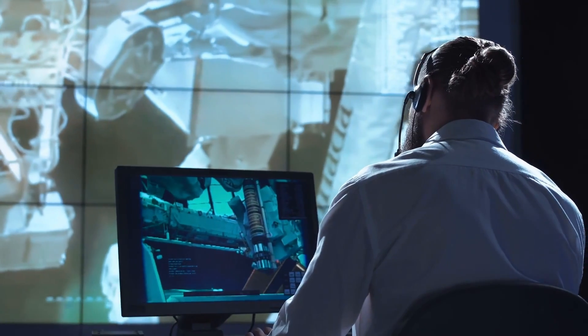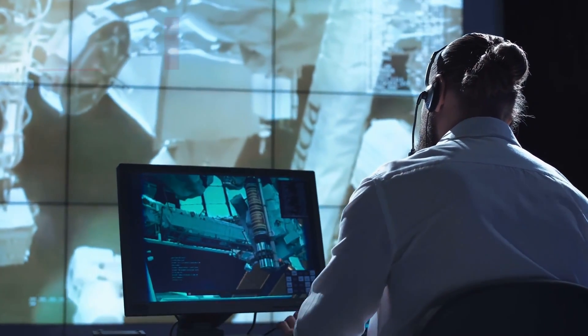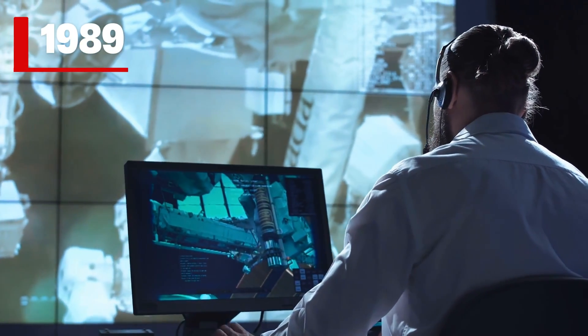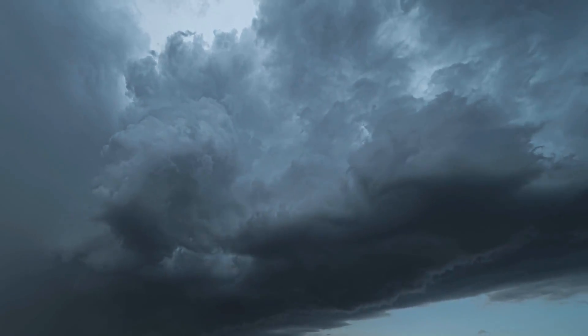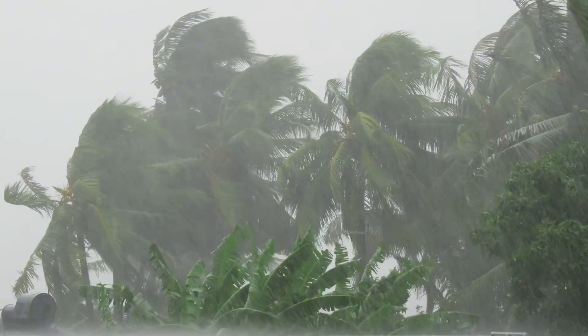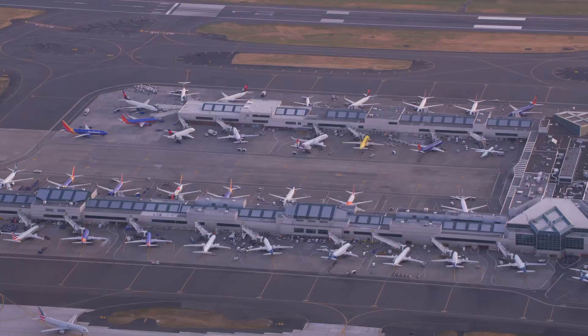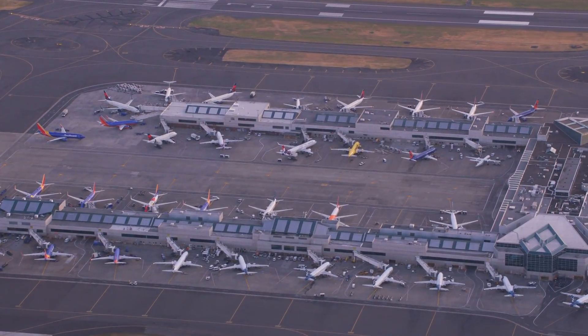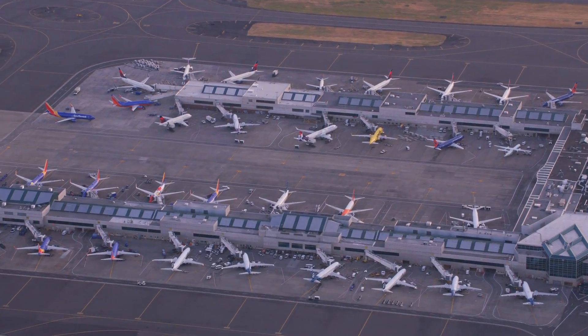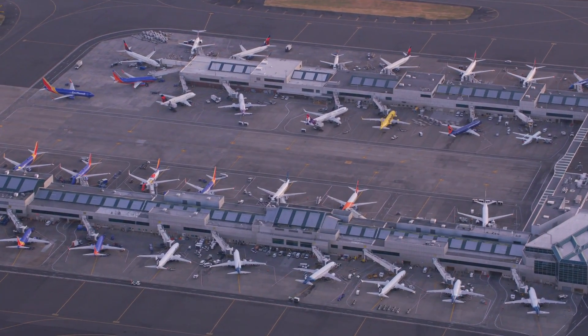Historical examples underscore this vulnerability. In 1989, a geomagnetic storm induced currents in the Hydro-Quebec power grid, causing a nine-hour blackout that left millions without electricity. The Halloween storms of 2003 disrupted airline navigation and forced satellites into safe mode. These events occurred during moderate phases of solar activity. A stronger storm under current technological conditions could have far-reaching consequences.